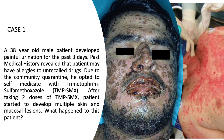Now we can answer Case 1. A 30-year-old male patient who developed painful urination for the past three days, with possible allergies to unrecalled drugs, self-medicated with TMP-SMX during community quarantine. After taking two doses, he developed multiple skin and mucosal lesions. What happened to this patient? Basically, this patient developed Stevens-Johnson syndrome, marked by multiple skin and mucosal lesions as you can see in the picture.